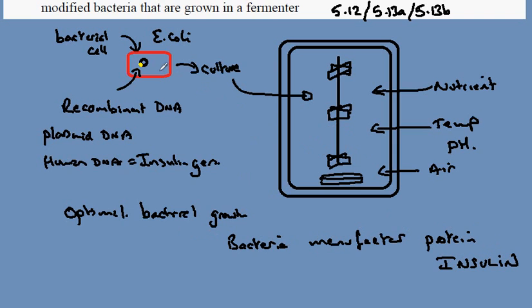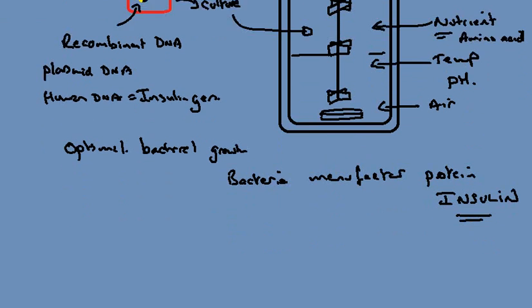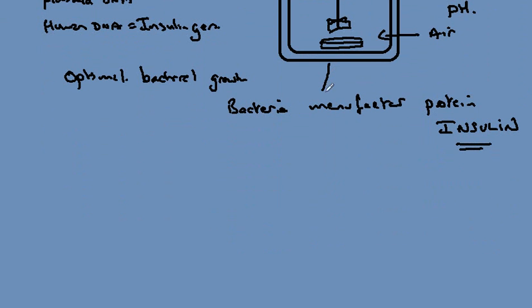The bacteria inside the fermenter will manufacture the insulin protein from the nutrients provided; amino acids will be important. Then it will be necessary to remove the product and carry out purification.